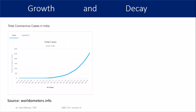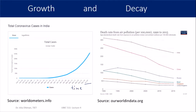A good example is the current coronavirus global pandemic. This data shows the total number of cases in India up to June 4 — the number of cases is growing with respect to time. For an example of decay, I have shown the death rate from air pollution per million from 1990 to 2015 for different countries. Most of those curves depict a decay pattern with respect to time.